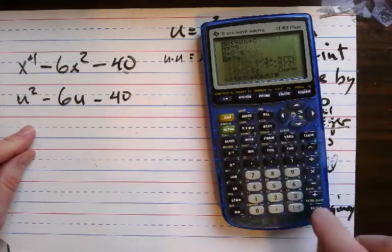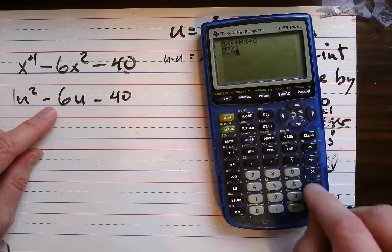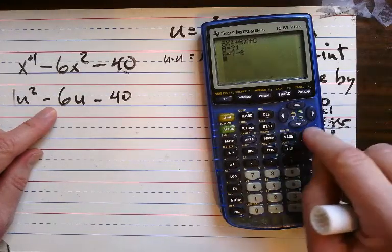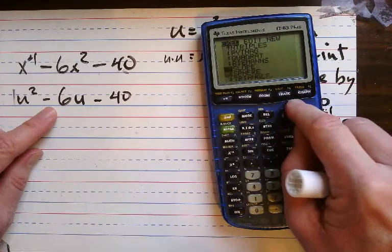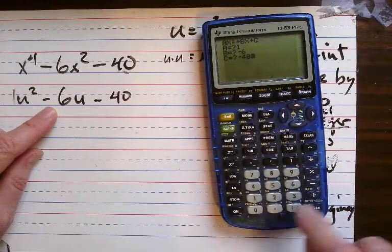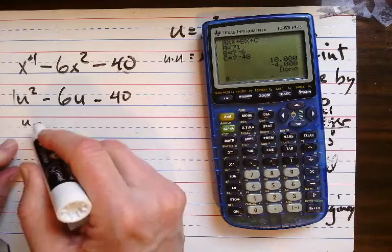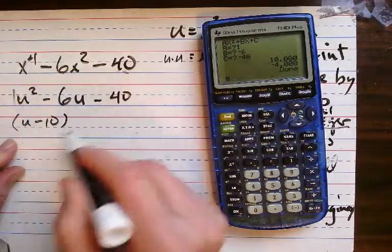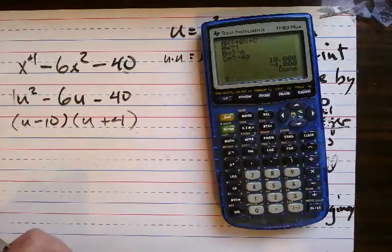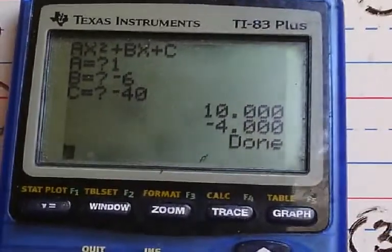So I go to my quadratic formula and I say, well, I know that's 1, negative 6, and negative 40. I get the two answers — oops, I goofed up, I put subtract 6 instead. Let me clear that out and start over. I put 1, negative 6, and negative 40. Now we're cooking. I get two answers, and remember, that's u equals 10 and u equals negative 4.